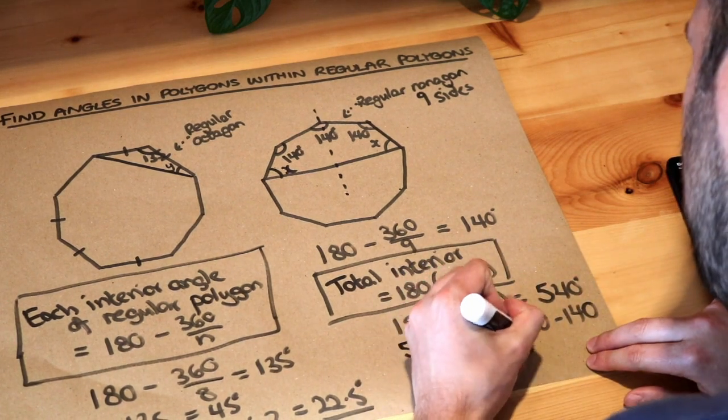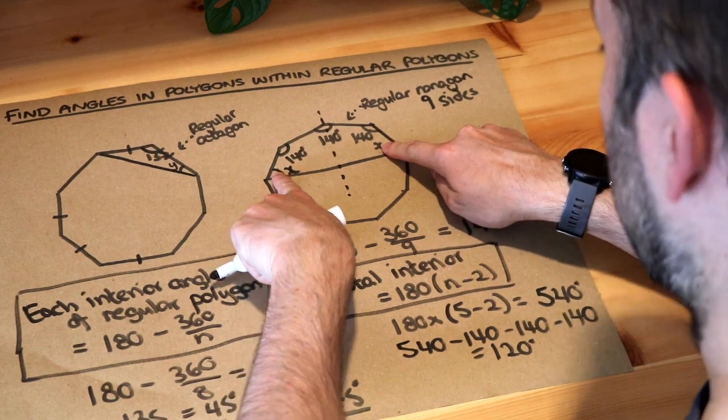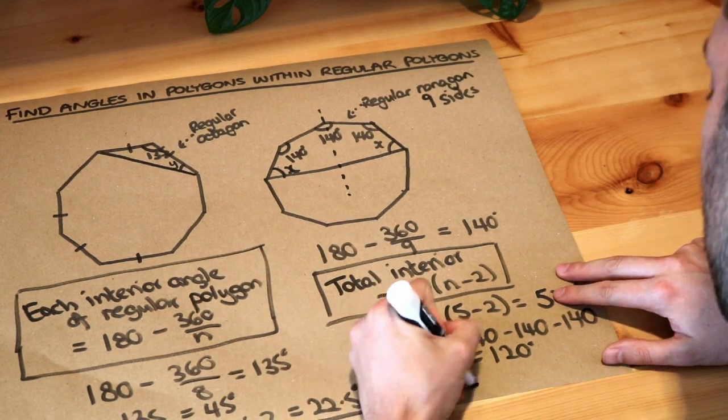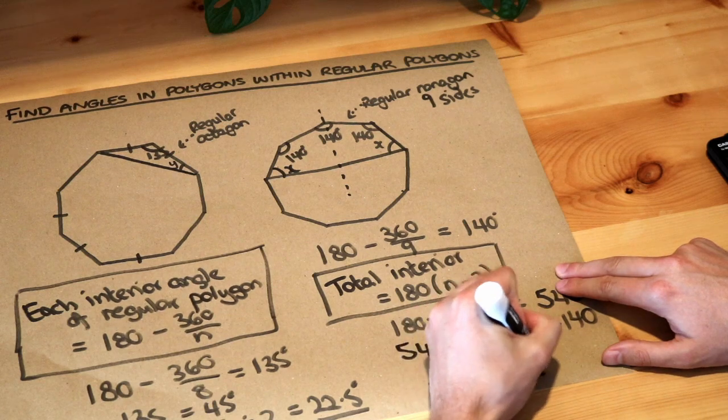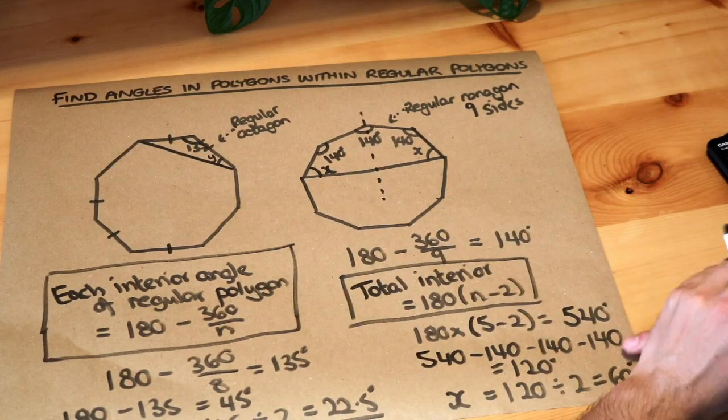And then we know these two remaining angles add up to 120, so x is just going to be half of 120, and that's 60 degrees. So that is the final answer. X here is 60 degrees.